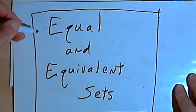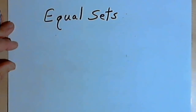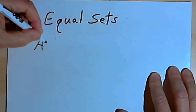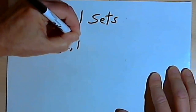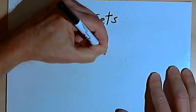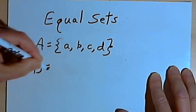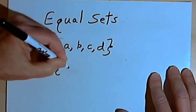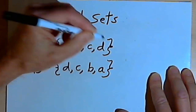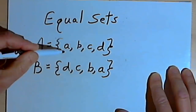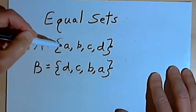This video is going to be about equal and equivalent sets. Let's start with equal sets. Let's say I have set A, and set A consists of the elements A, B, C, and D. And let's say I also have set B, and set B consists of the elements D, C, B, and A. Now remember, it doesn't matter what order I write elements in.